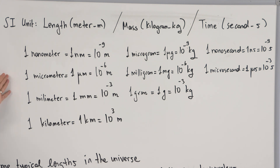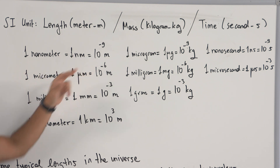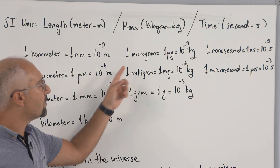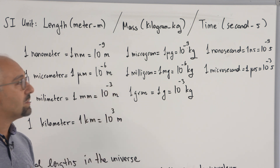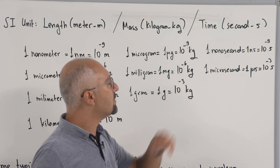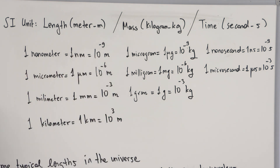There are some examples you can see here, starting from length to time from top to bottom. For example, one nanometer is abbreviated 1 nm, equal to ten to the minus nine meters. One kilometer is 1 km, equal to ten to the three meters. Similarly, we can define mass units — for example, one microgram equals ten to the minus nine kilograms. And one nanosecond equals ten to the minus nine seconds. The important thing is that in SI units we always express length, mass, and time in meters, kilograms, and seconds.